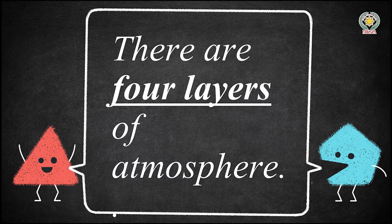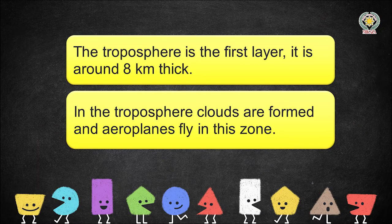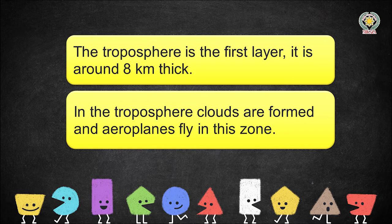The first layer of atmosphere is around eight kilometers thick and it is called the troposphere. In the troposphere, clouds are formed and aeroplanes fly in this zone — not higher than the troposphere.